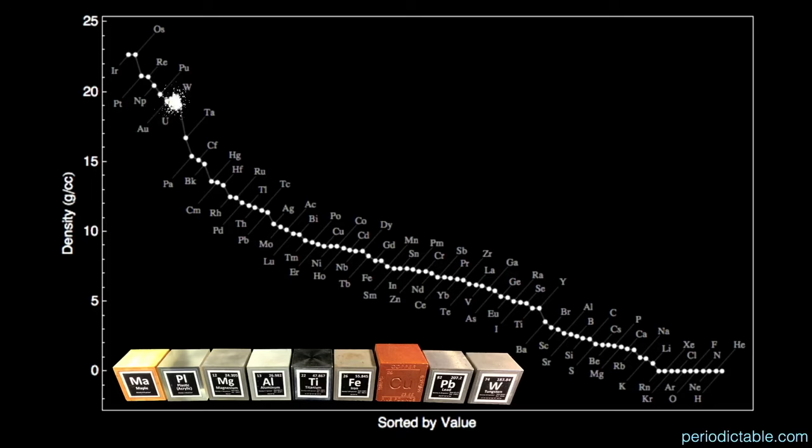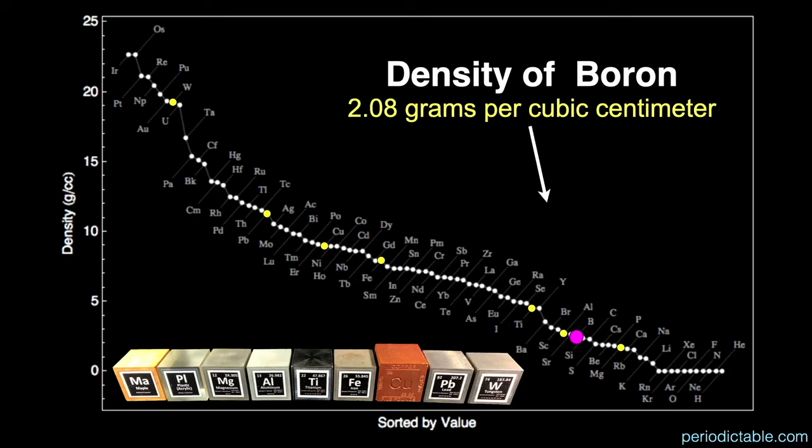My set of blocks have a wide range of densities, with the densest at tungsten, to lead, to copper, to iron, to titanium, to aluminum, to magnesium. I also have plastic and wood blocks, but those are not technically elements. Again, boron's density is 2.08 grams per cubic centimeter — the magenta circle — slightly below the density of aluminum.